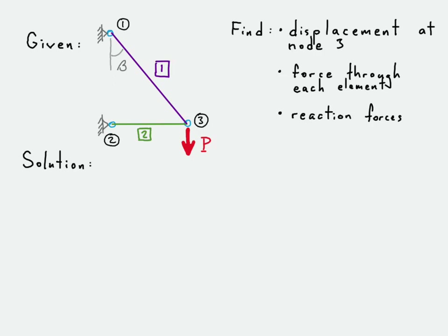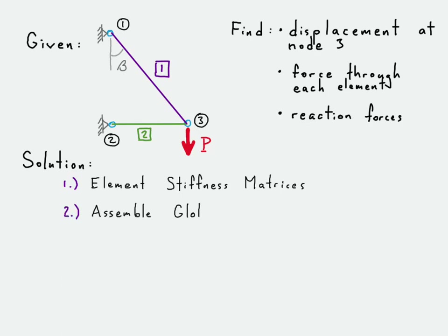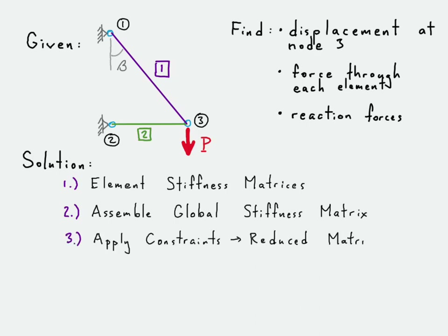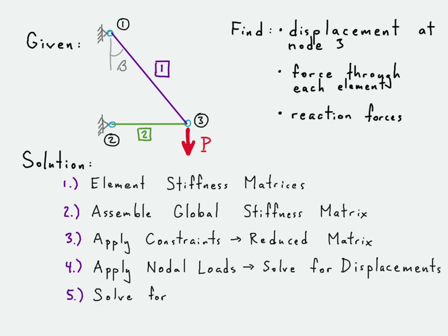The process is going to be the same as any finite elements analysis problem, where we first create the element stiffness matrices. We use those stiffness matrices to assemble the global stiffness matrix equation, then reduce that equation by applying the constraints to remove rows and columns. Once we have a reduced matrix equation, we apply the node loads to solve for the displacements, then use those displacements to solve for the reactions and elemental forces.